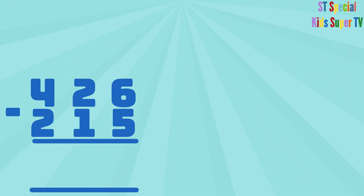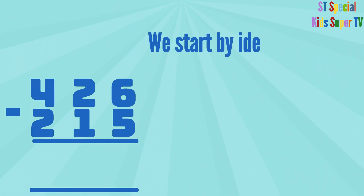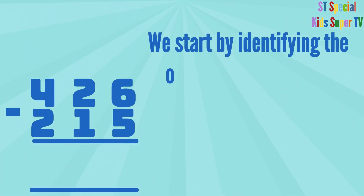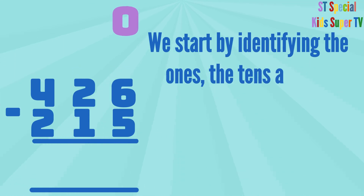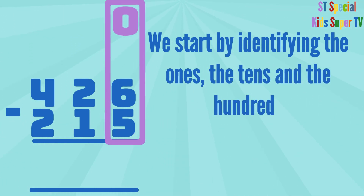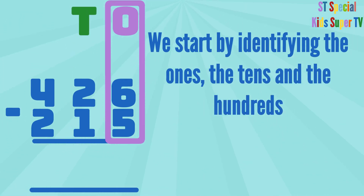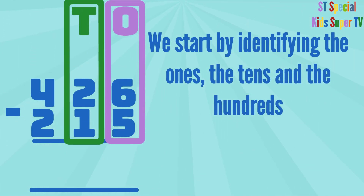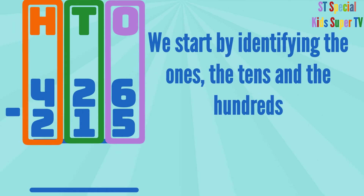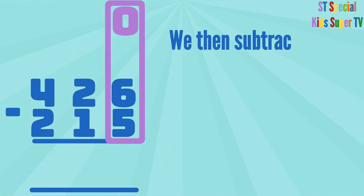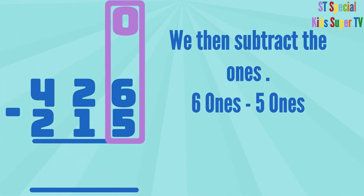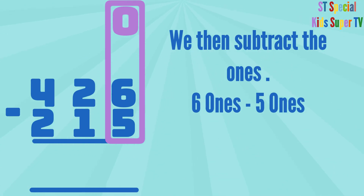We start by identifying the ones, the tens, and the hundreds. We then subtract the ones: 6 ones minus 5 ones.